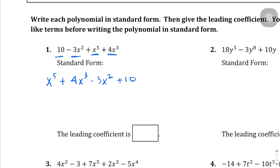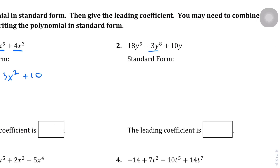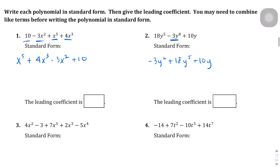For question two, we put the term with the highest degree first: negative 3y² ... wait, actually 18y⁵ comes first, then negative 3y² ... plus 10y. We also need the leading coefficient — whatever is in front of the first term. For question one, even though it's not written, the leading coefficient is one. For question two, the leading coefficient is negative three.